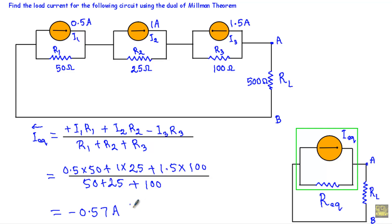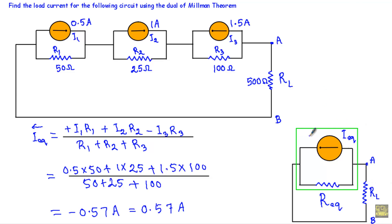Therefore, if I indicate the direction of I_equivalent in the corrected direction, it will be equal to positive 0.57 ampere. So I_equivalent has a value of 0.57 ampere flowing in the corrected direction.